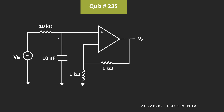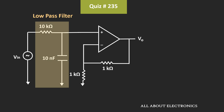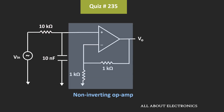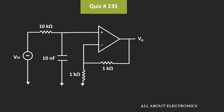If you closely observe this circuit, this portion of the circuit is the low pass filter, while the output of the low pass filter is given to the op-amp circuit. The op-amp is configured in the non-inverting configuration. Let's say the output of this low pass filter is equal to Vx, so Vx will be the input of this op-amp circuit.